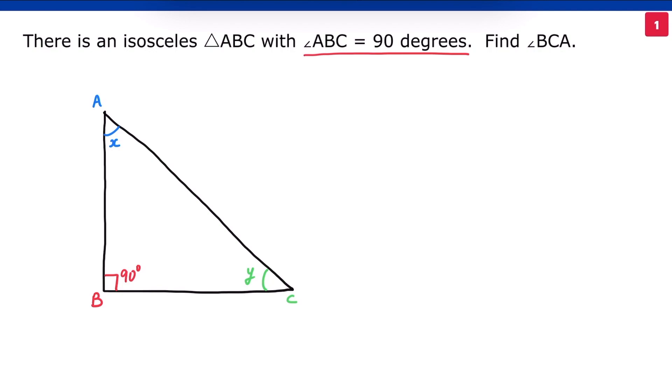We know that the sum of interior angles of a triangle is 180 degrees. So X plus Y plus 90 equals 180 degrees. We have two variables, X and Y, but just one equation. How do we proceed?